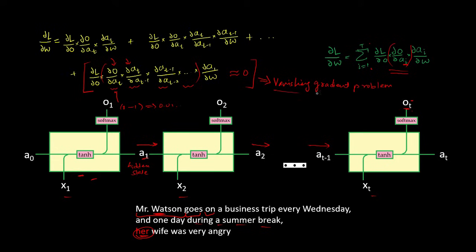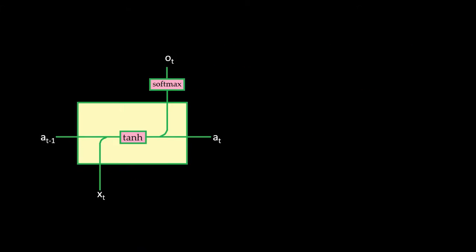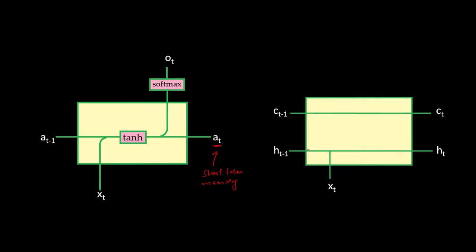Vanishing gradients means the gradient value becomes so small it is almost equal to 0. That is why we need another model that has long-term memory along with short-term memory. In an RNN the hidden state a is updated at every time step, so it quickly loses earlier information — that is why RNNs have only short-term memory. But in LSTM we have both long-term memory and short-term memory, which is why it is called Long Short-Term Memory.